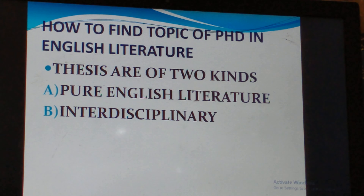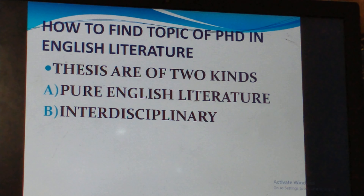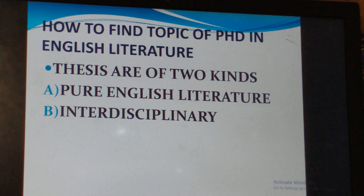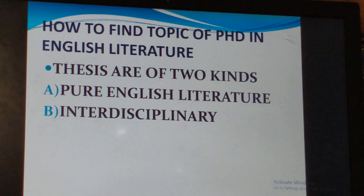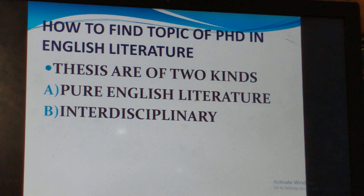Nowadays, English literature theses come under two categories. The first are theses written purely based on English literature. The second are interdisciplinary theses — not actually belonging purely to English literature, but diverging into fields of political science, sociology, and history, integrating elements of those subjects with English literature. Those theses are called PhD theses in English, not exactly in English literature.